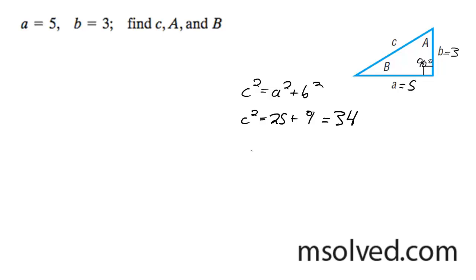So what I'm going to do now is c equals the square root of 34, which is equal to... Well, it's equal to the square root of 34. You can't really reduce it beyond that.